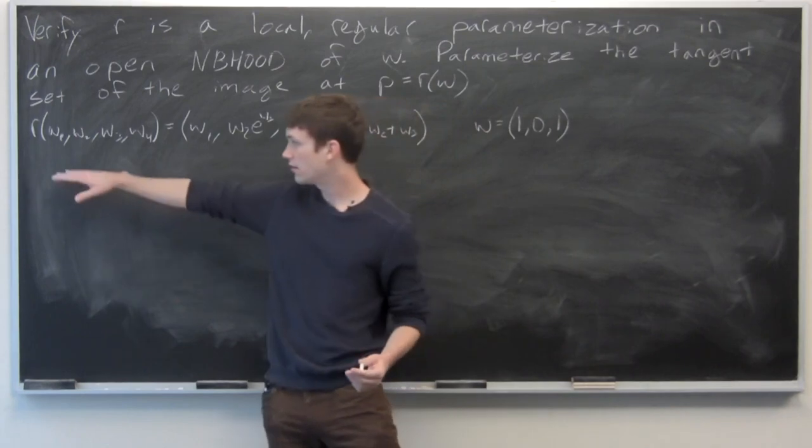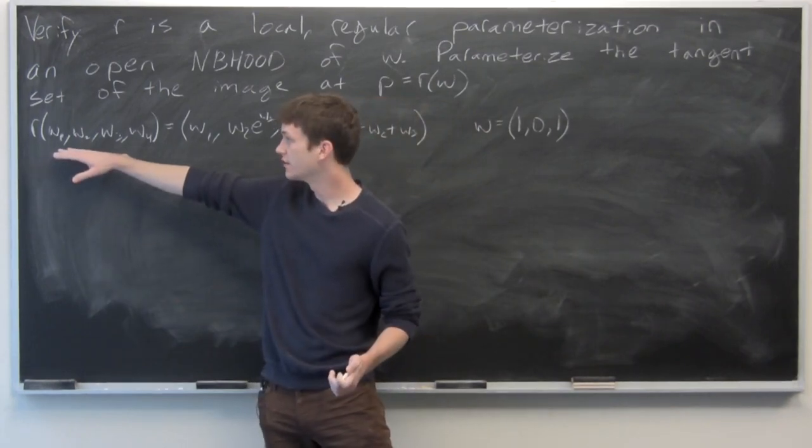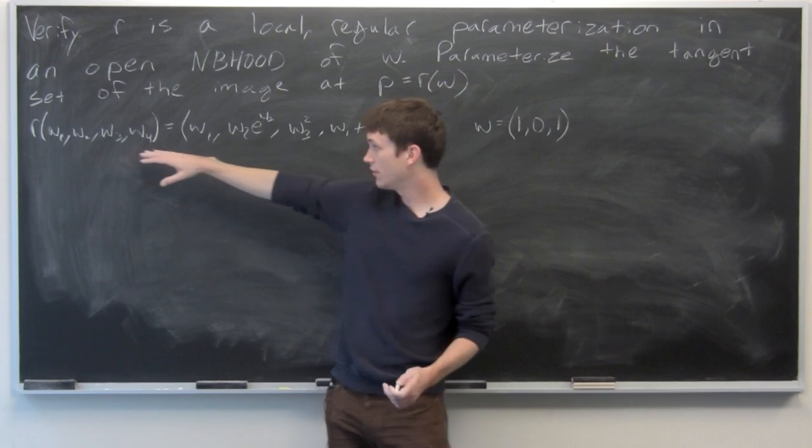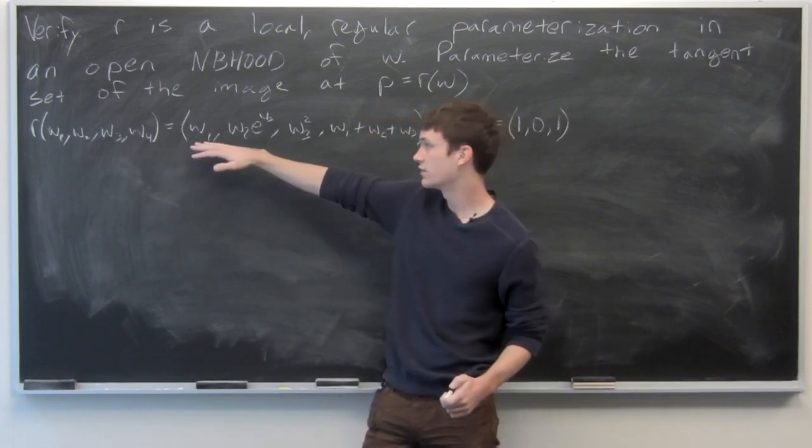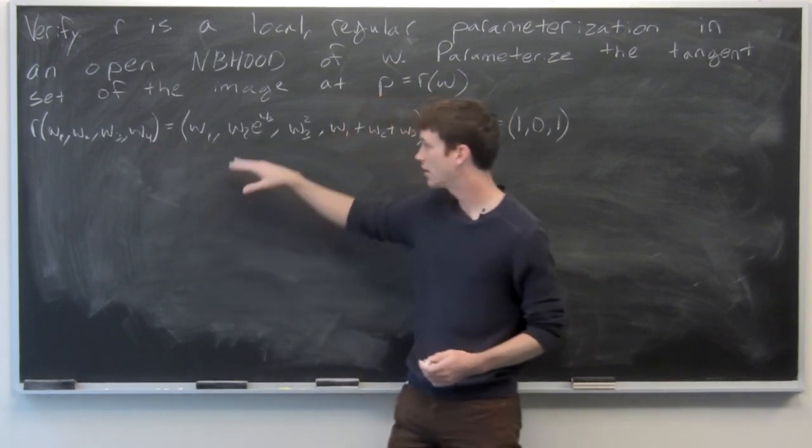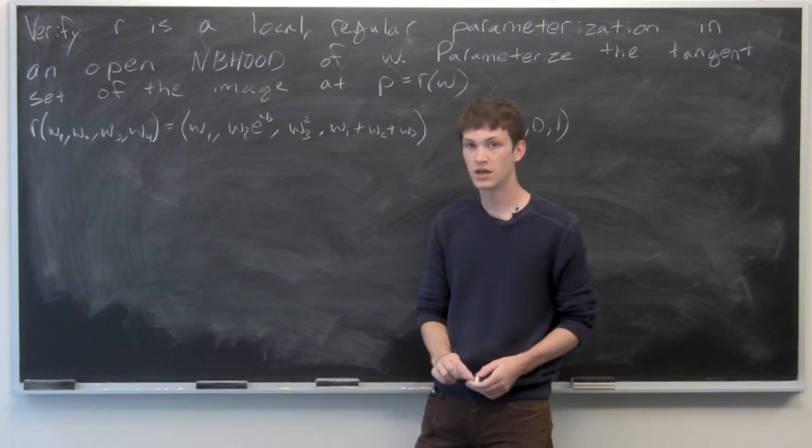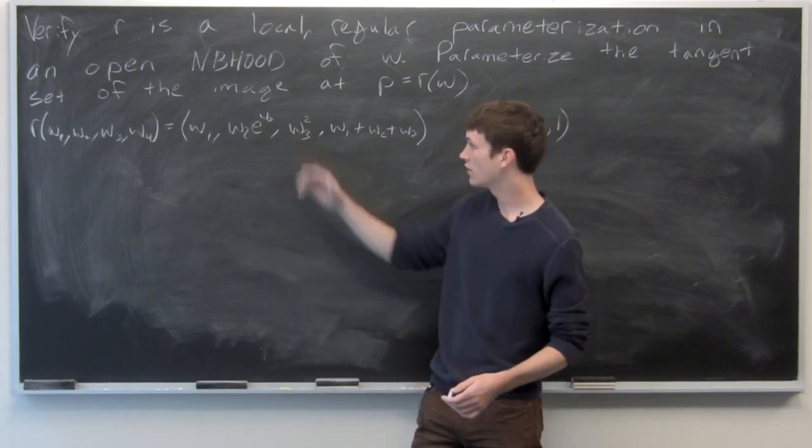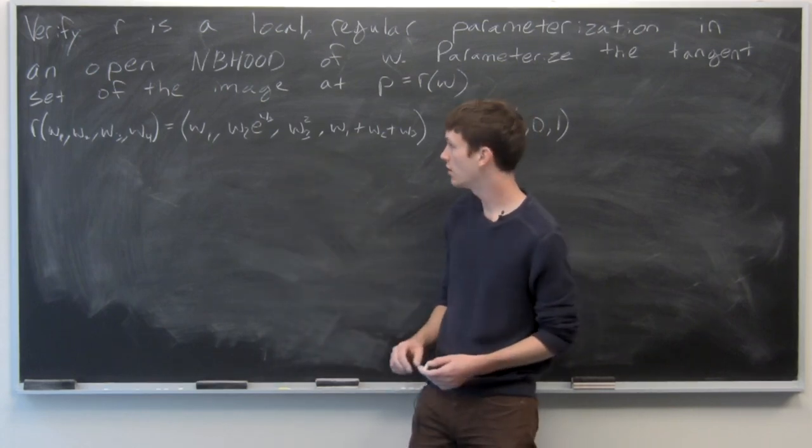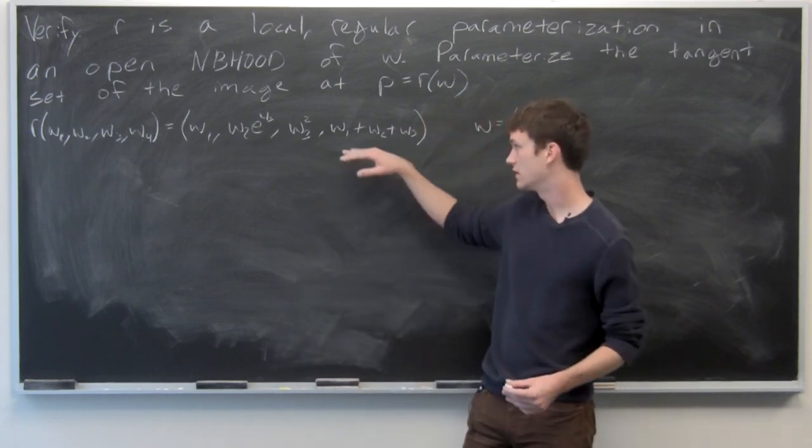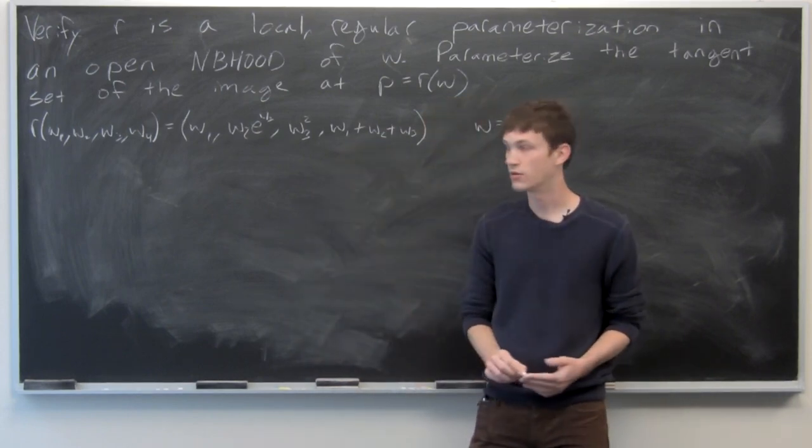And r is defined as r of w1, w2, and w3 is equal to the first component w1, second component w2 e to the w3, third component w3 squared, and the fourth component is the sum of w1 to w3.